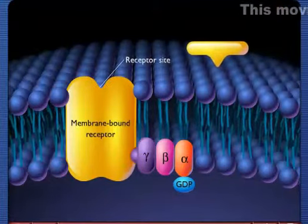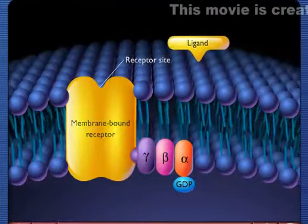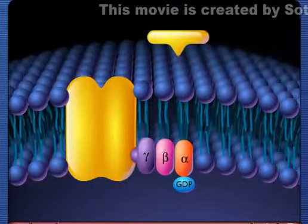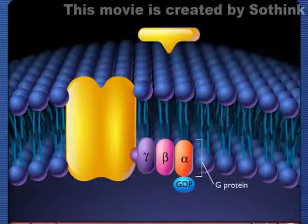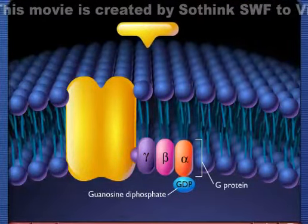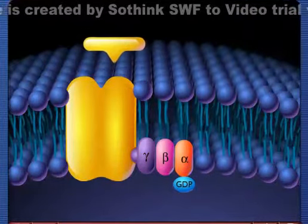As a receptor site for a small molecule called a ligand exposed on the outside of the cell, the portion of the receptor on the inside of the cell can bind to the G protein, which has a guanosine diphosphate attached to its alpha subunit. When the ligand binds to the receptor site on the outside of the cell membrane, the G protein changes conformation.